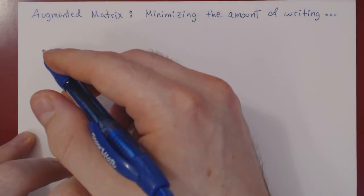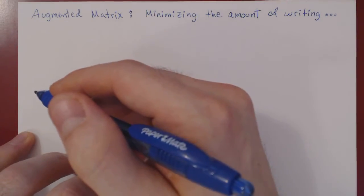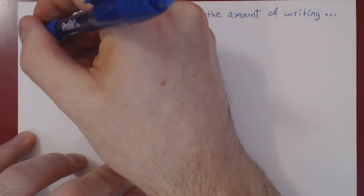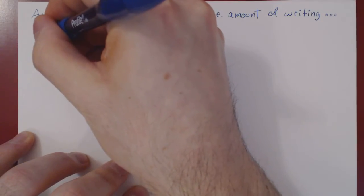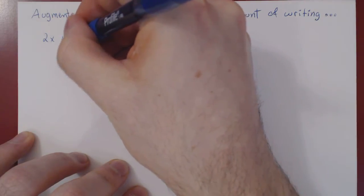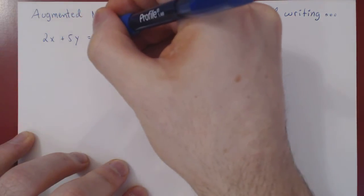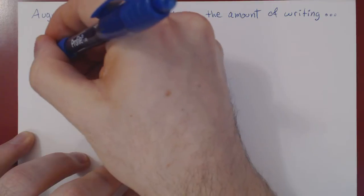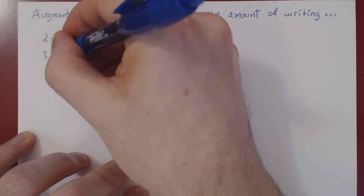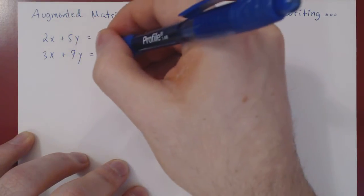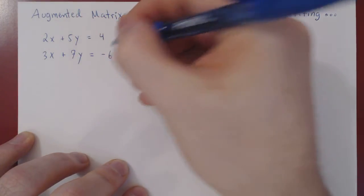Let's consider a very simple system in two variables, two equations, one that we have considered before. Say 2x plus 5y is equal to 4, and 3x plus 7y is equal to negative 6.